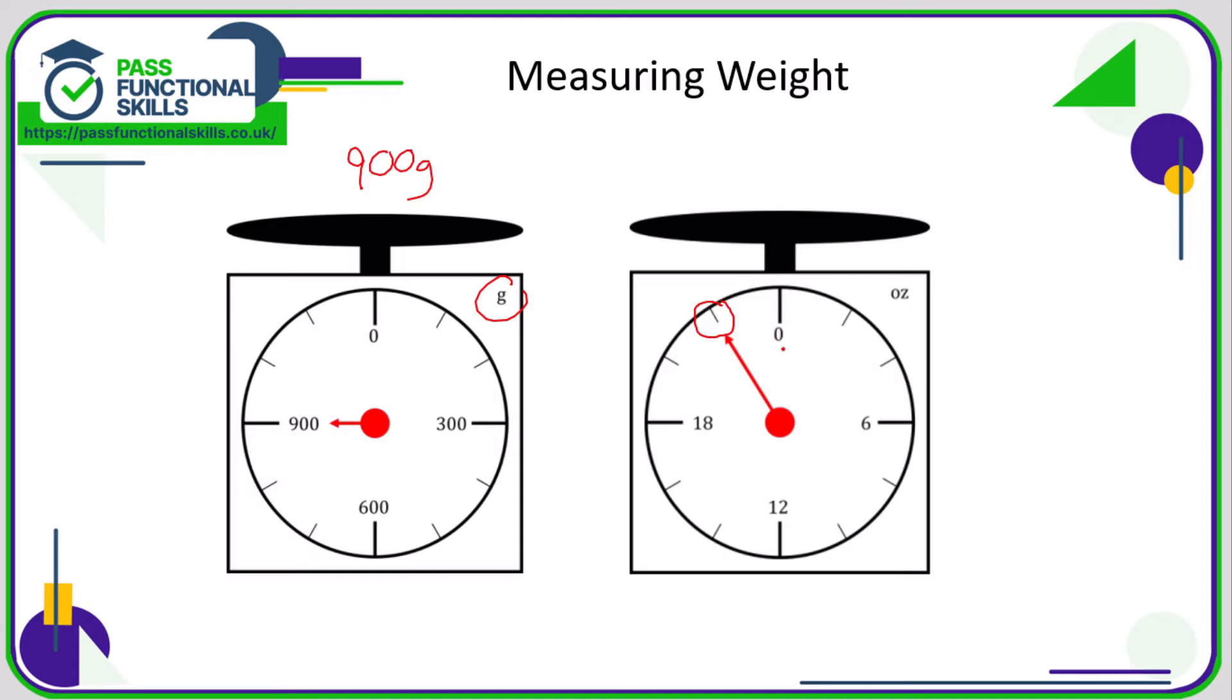Let's have a look at between 0 and 6. We've got 1, 2, 3 steps between 0 and 6, so 6 divided by 3 is 2. Therefore we're going up in 2 ounces at a time, so 0, 2, 4, 6 - that works. If we apply that over here, then this is 18, 20, 22 ounces.